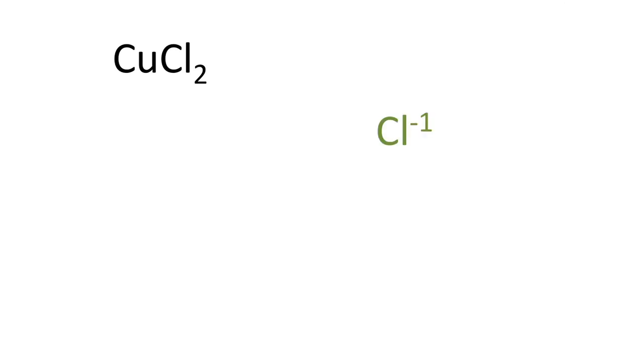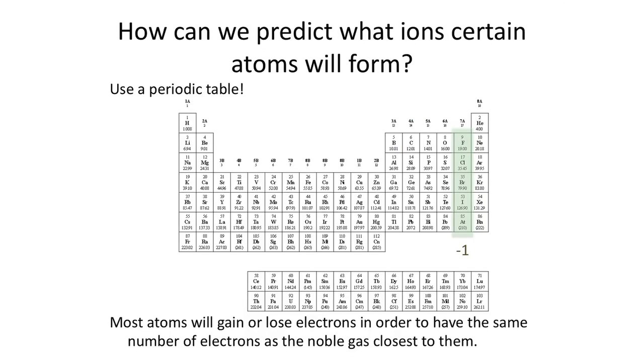Let's take a look at an example. For the formula CuCl₂, to determine the charge of the copper ion — which will become the Roman numeral in the name — I first need to know the charge of the anion. Chlorine tends to form ions with a charge of negative one. You can figure this out using the periodic table: most atoms gain or lose electrons to have the same number as the noble gas closest to them, following the octet rule. That means all atoms in the second-to-last group on the periodic table tend to form ions with a charge of negative one.